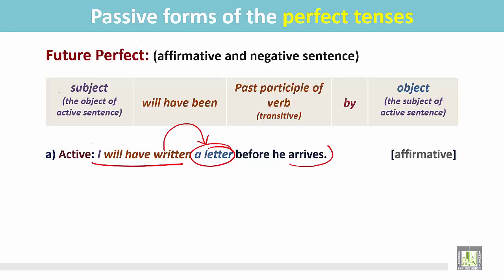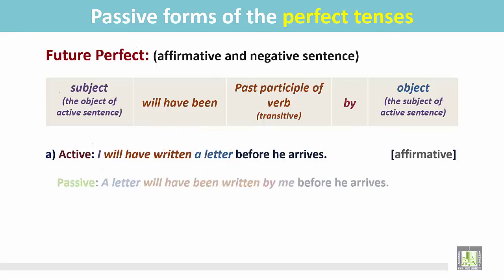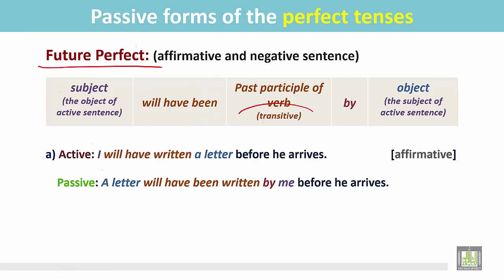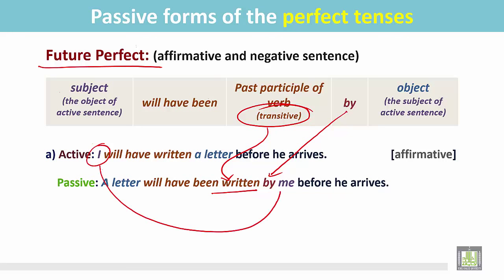There is no object for this verb in this sentence. The object of the active sentence becomes the subject in the passive — 'a letter' is now the subject in the passive. Then, according to the structure of the future perfect tense, we use 'will have been.' The verb is in the past participle form 'written,' followed by the preposition 'by,' and the subject of the active sentence becomes the object in the passive.